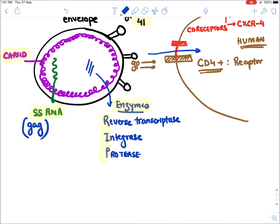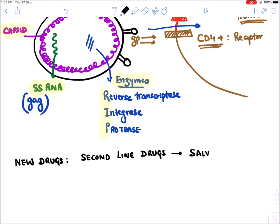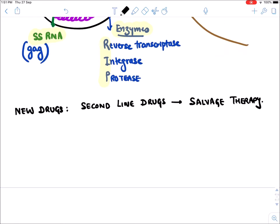There are certain new drugs for HIV. These new drugs are not first-line drugs — they are second-line drugs, and they are only given as salvage therapy, meaning they are given in resistant cases of first-line drugs.